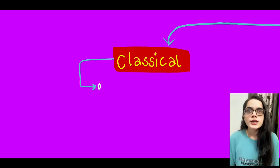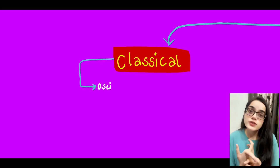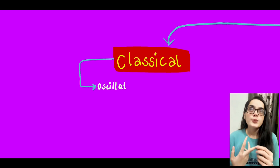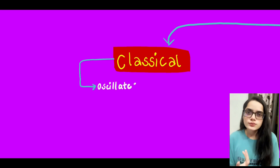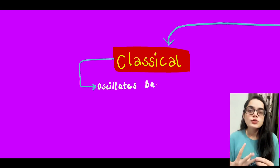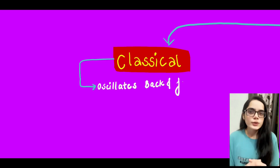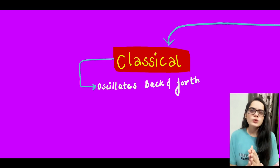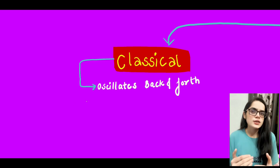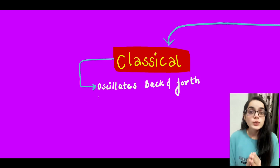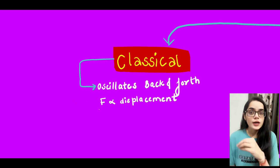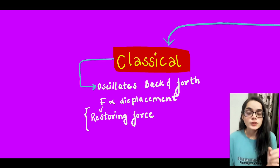Classical harmonic oscillator examples include the mass-spring system, the pendulum system, small oscillations in a pendulum, and strings of a guitar. What is common in these? They oscillate — meaning they go back and forth between their equilibrium position.